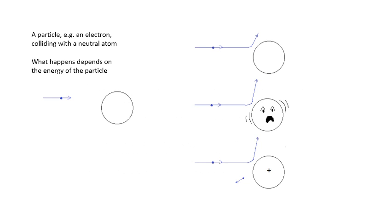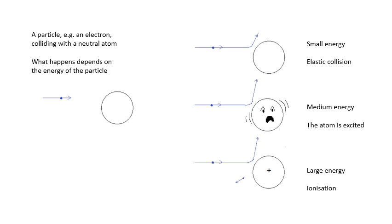Consider this: you've got a particle such as an electron or an alpha particle, and it collides with a neutral atom. There are three things that might happen when this electron bangs into an atom, and it depends on how much energy the particle has. If it has a very small amount of energy, then it will just bounce off and there'll be an elastic collision. For example, if two atoms in a gas bang into each other, there's just an elastic collision — nothing special happens.